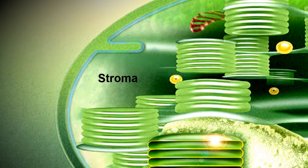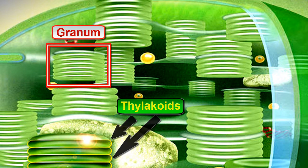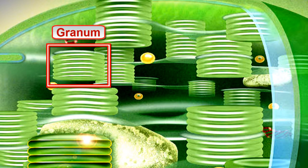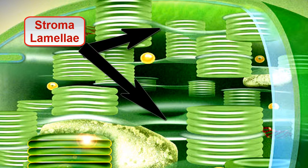Stroma surrounds grana, which are comprised of little green discs stacked like pancakes. These green discs are called thylakoids. A single stack is called a granum. The membranes that interconnect the grana are called stroma lamellae.